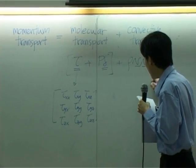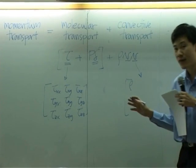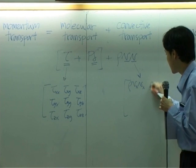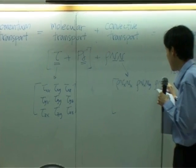For rho bv, that should be 9 components as well. That will be rho bx, bs, bx, by, and bx, bz.